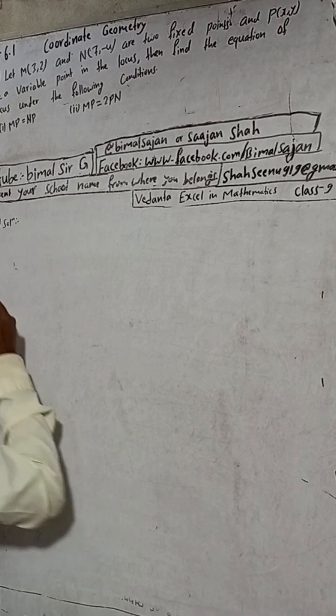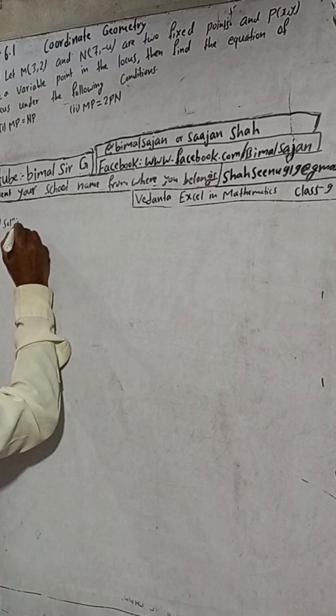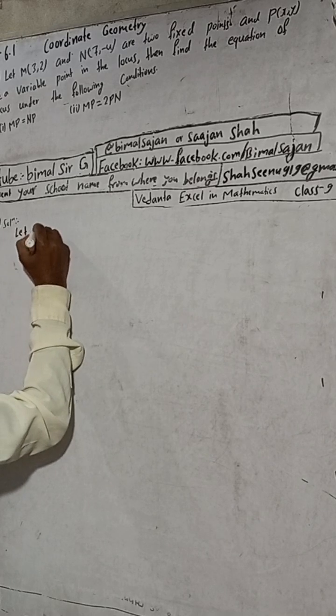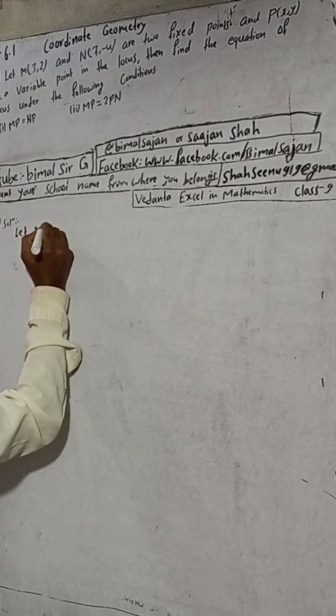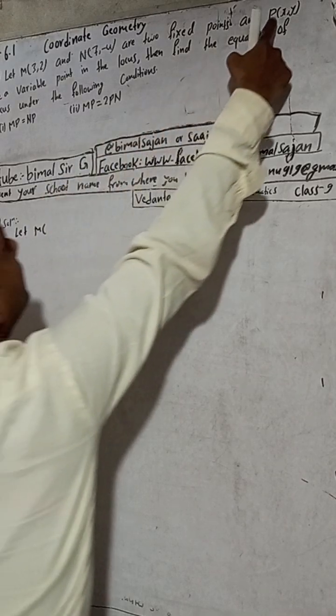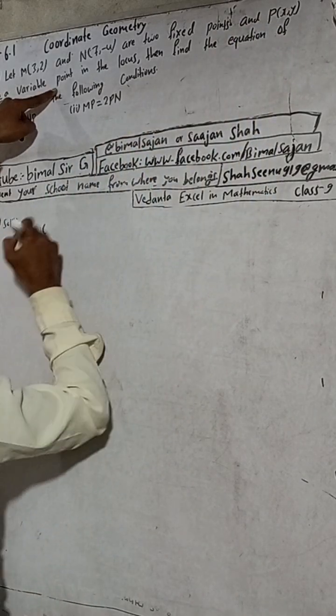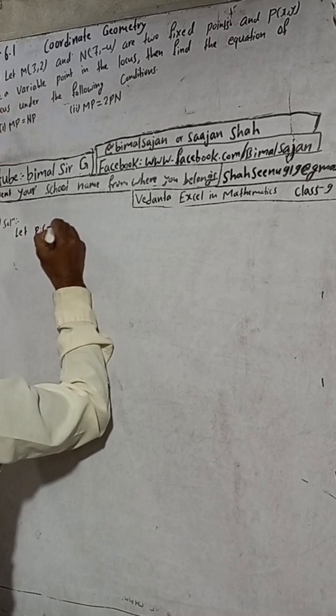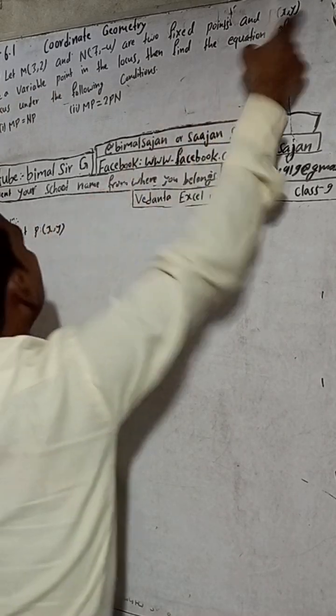So here, given here is let M... this is the variable point, so we can suppose, let P, let P(x,y) be...